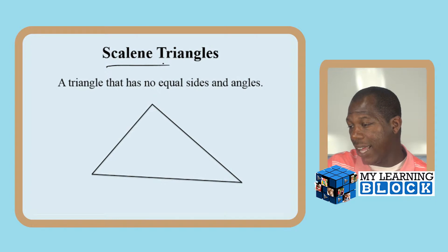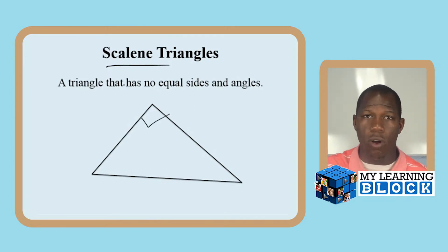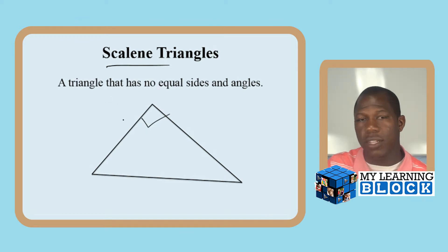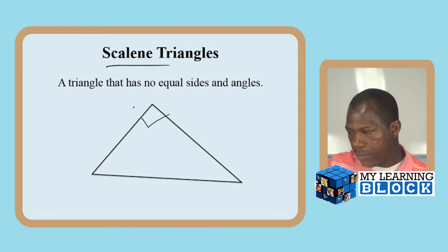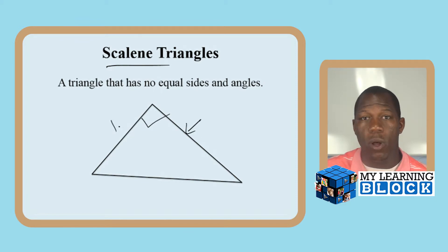A lot of right triangles will be scalene triangles — not all, of course, but a lot of them. There are many instances where we get scalene right triangles, and that basically means this side is different from this one and the hypotenuse is different from all three.